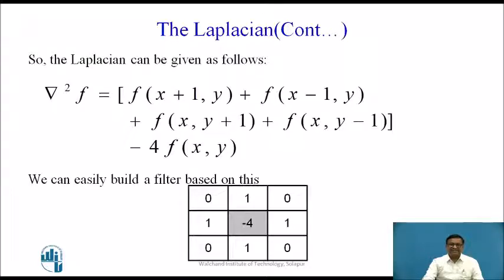Since the center pixel has weight −4, the center of the 3×3 matrix is −4. The adjacent pixels — for example f(x, y−1), the same row previous column — have weight 1. Positions not present in the equation are 0. This is the basic Laplacian filter.